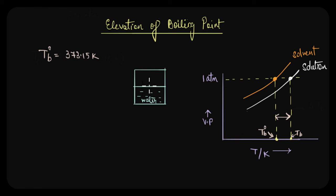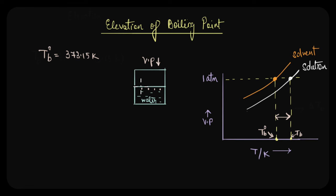When we add a non-volatile solute to this liquid, the vapor pressure of the solution decreases. So for the solution to boil, we have to increase the temperature further — more than the boiling point of pure water — because only then will the vapor pressure increase sufficiently to become equal to the atmospheric vapor pressure. This is exactly what is depicted here: the boiling point of a solution is always higher than the boiling point of the pure solvent.